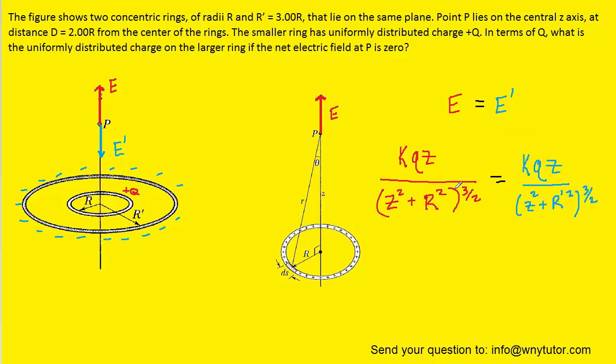Now we just want to note a couple of things about this equation. The charge that's present on the smaller ring was given to us as positive Q, so we can substitute positive Q in for that charge. For the ring of negative charge, we don't know that charge. That's actually what we're looking for, so we'll just call it Q prime for now.